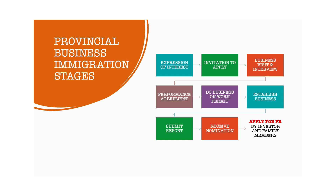Now I want to touch upon the process for applying for the entrepreneurship program. You will need to create an expression of interest first to the province of choice. Based on your scores, you will be invited to apply — scores are also dependent on how strong your business plan is. You will then plan to make an exploratory visit to do some research on what business you can purchase or how you can establish your foreign business in Canada. You then sign a performance agreement and apply for a work permit to come to Canada to establish and grow your business. You then run your business for at least one year and submit a report of your business operation. If satisfactory, you may receive a nomination from the province, with which you can apply for PR for yourself and your family members.